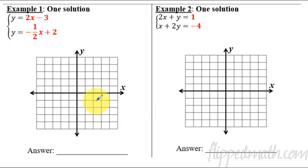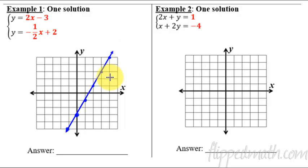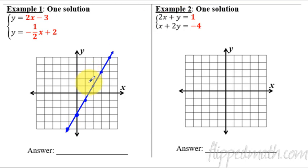So let's jump into our first example. We're going to do an example with one solution, meaning the lines will cross. So you've got to write these down if you don't have them yet — pause and get those written. Now I'm going to graph this. Y-intercept of negative three, and a slope of two. So I'm up two over one. Now this is important that you get plenty of dots when you're graphing these because it is extremely important to be accurate on our graphs.